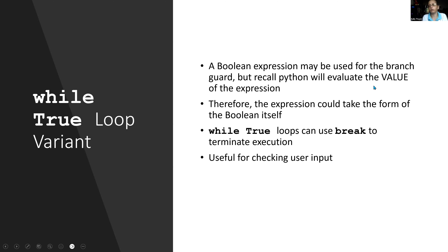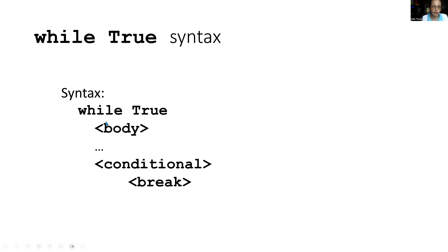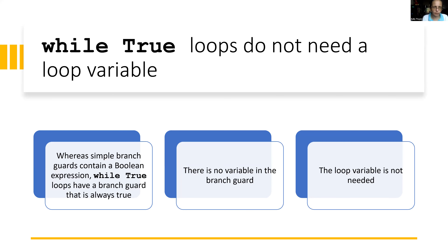Let's take a formal look at the while True / break setup. A boolean expression may be used for the branch guard, but Python will evaluate the value of the expression — so the expression could literally be the boolean True itself. While True loops use break to terminate execution. This is useful for checking user input. The syntax: while True, body, conditional, break. While True loops do not need a loop variable, because the branch guard is always true and contains no variable.